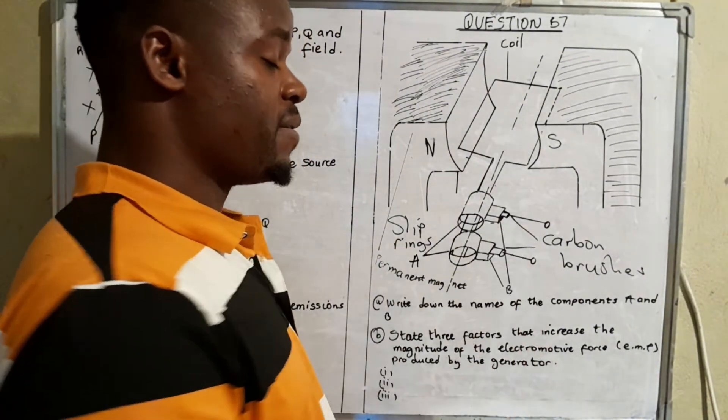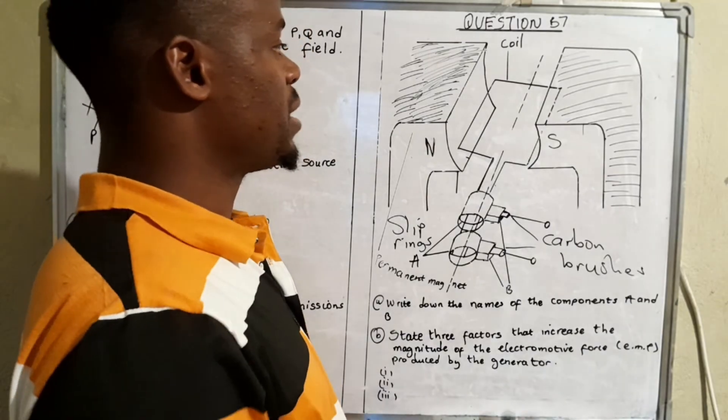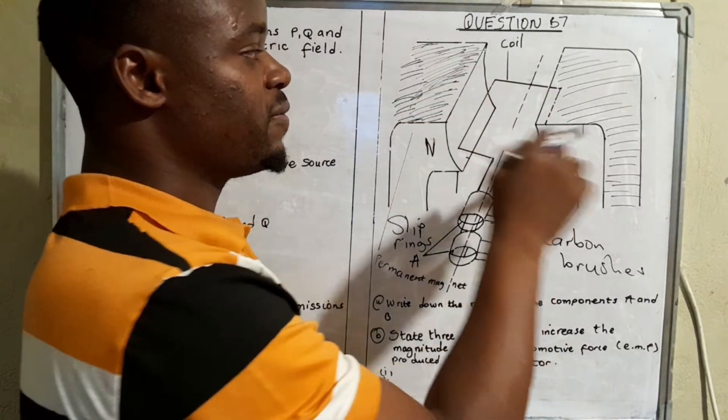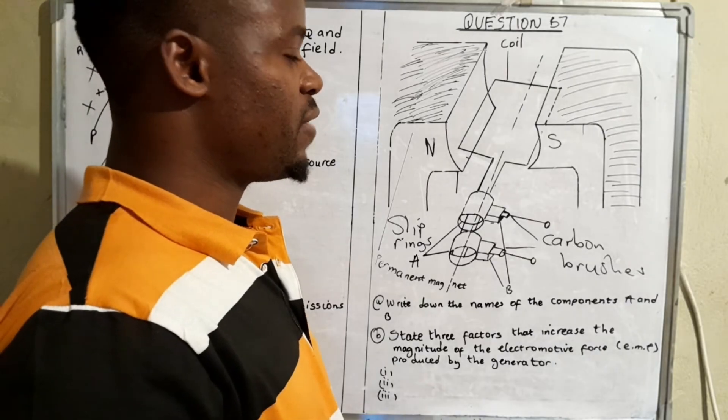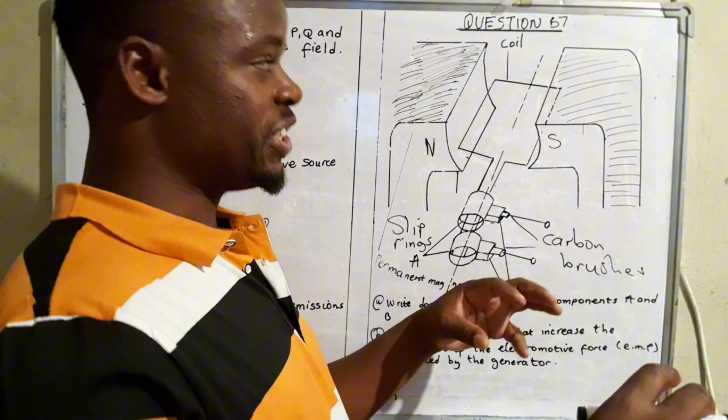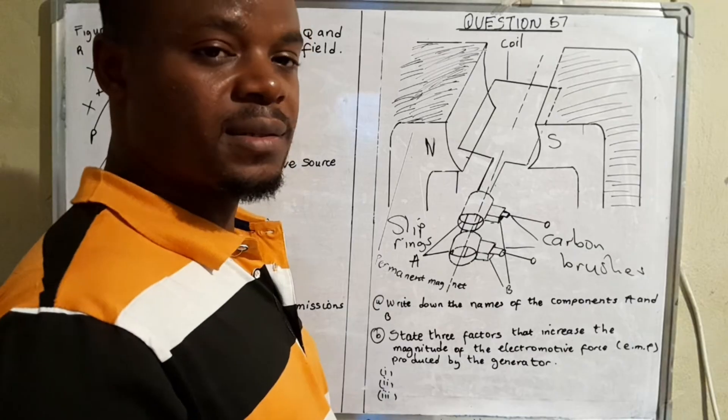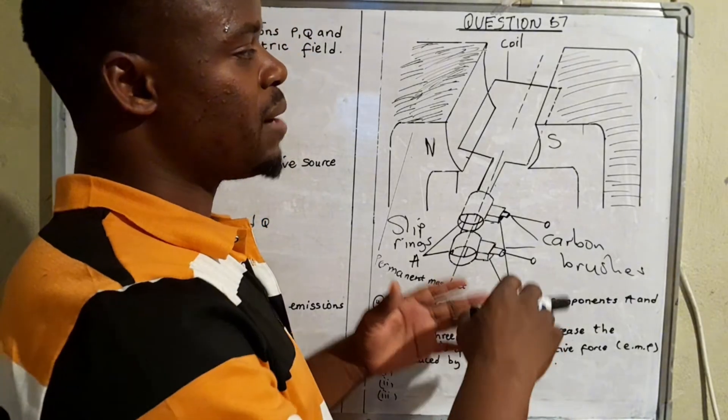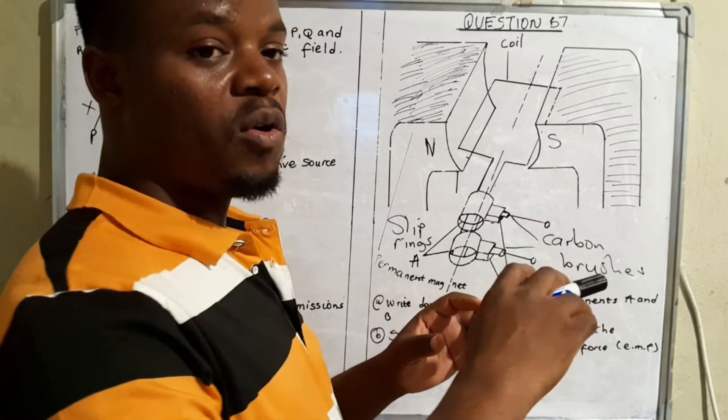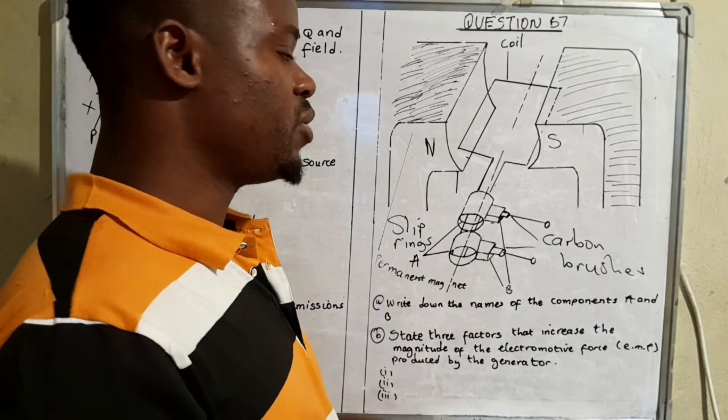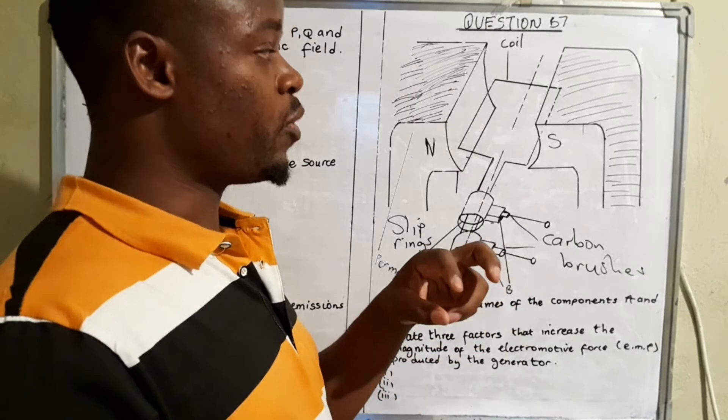If it's spinning at a slow pace then the magnitude of the electromagnetic force lessens. The other factor is the size of the permanent magnet that is being used. If you use a much larger magnet then the electromagnetic force that is induced is of great magnitude. A smaller magnet produces less.